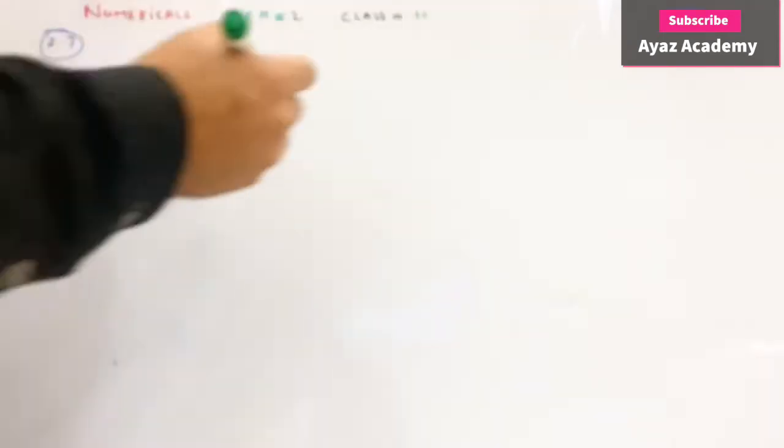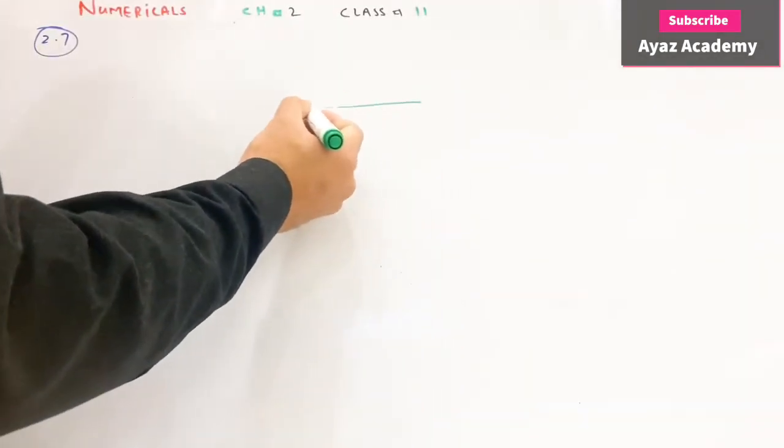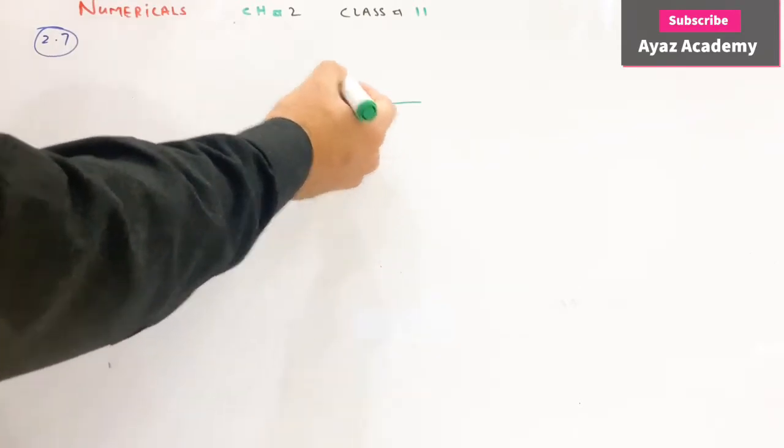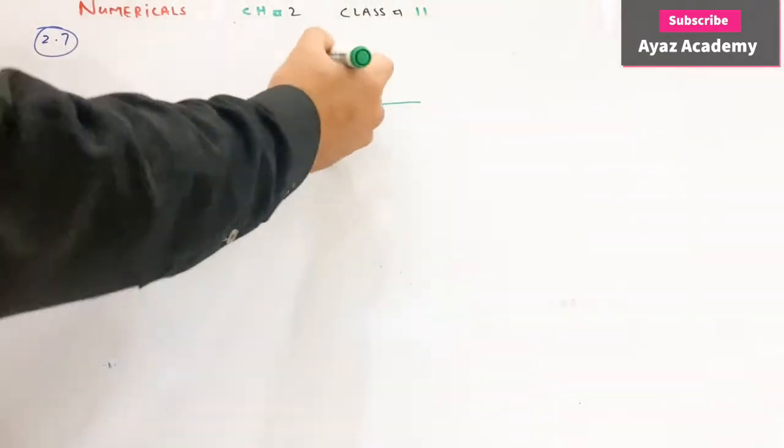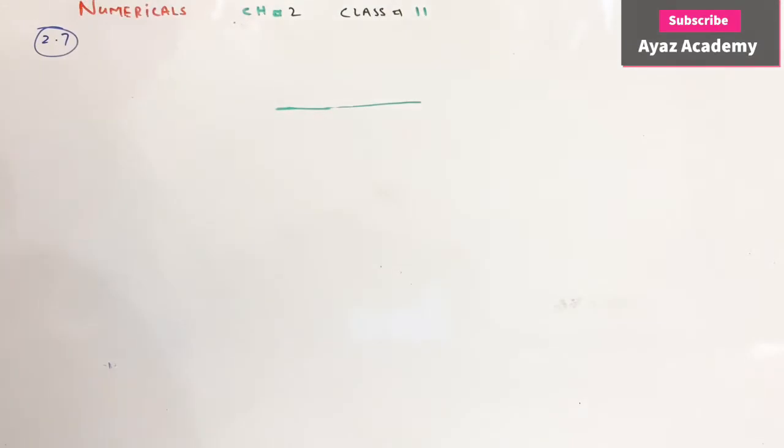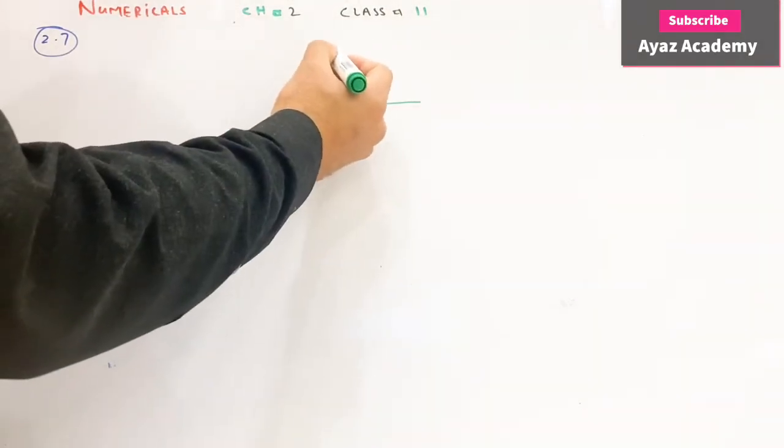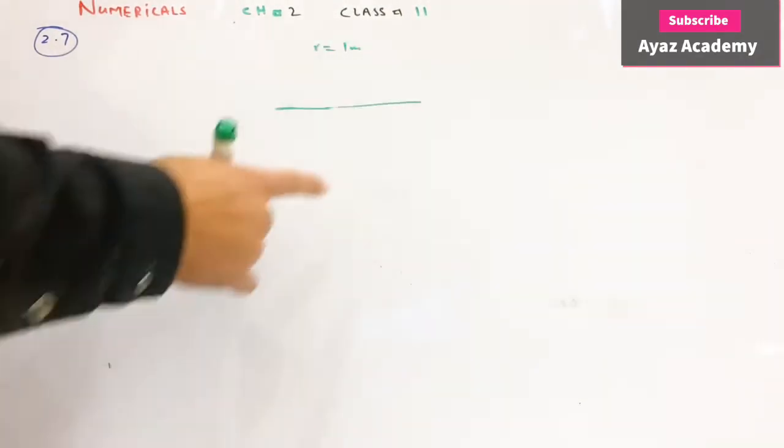What is a uniform rod? This uniform rod has this length. Suppose we call it R, which is one meter, the total length of the rod.